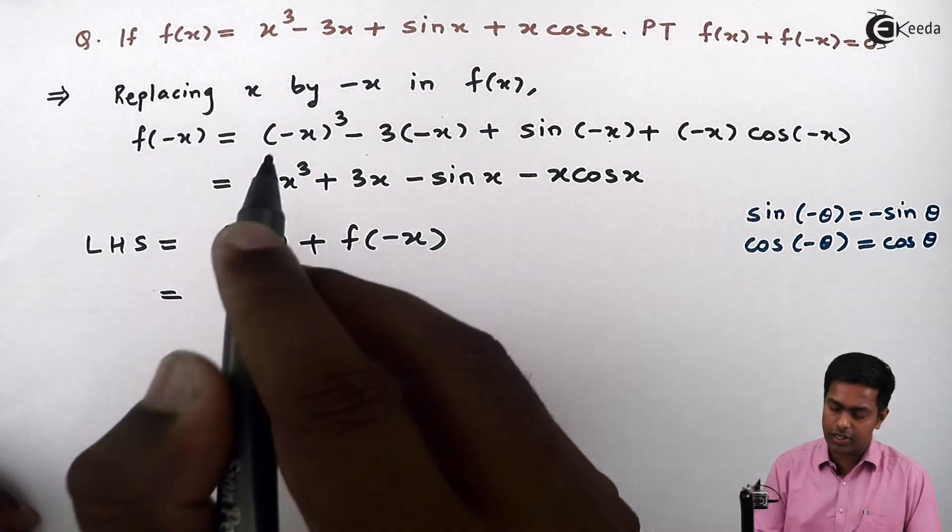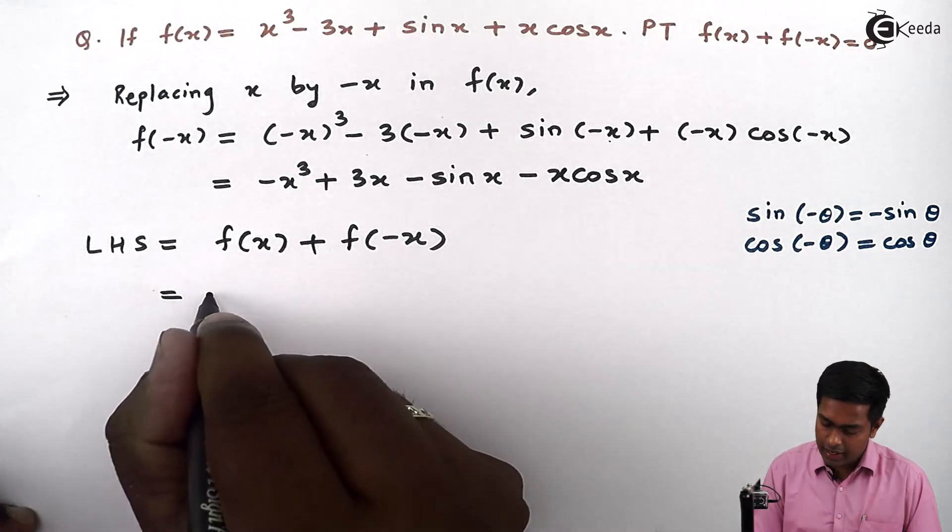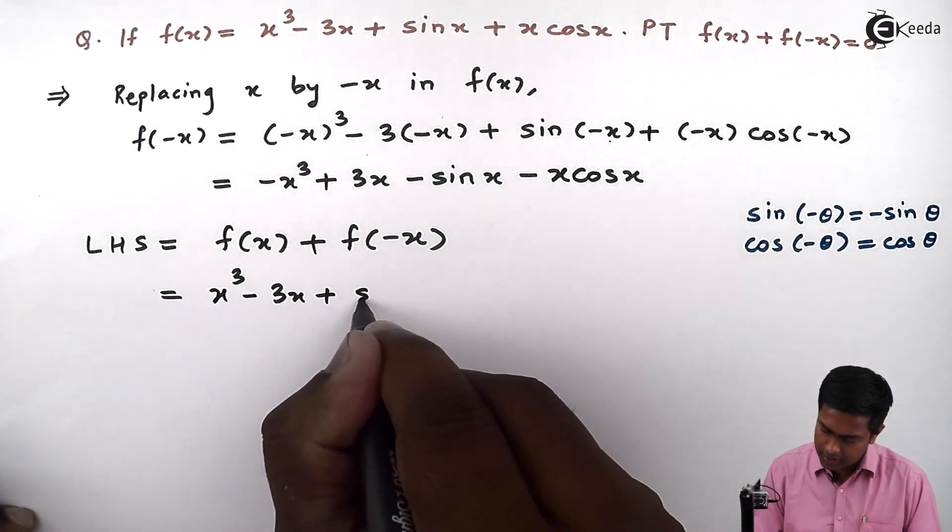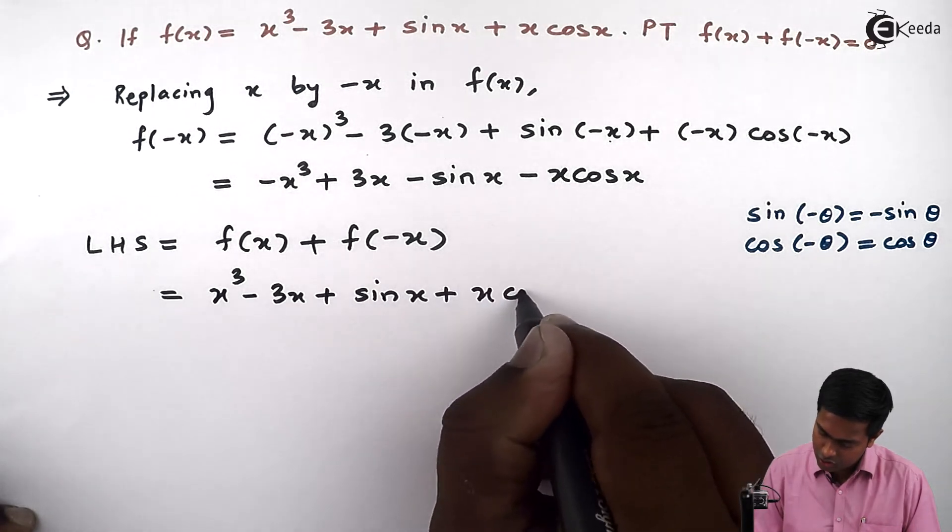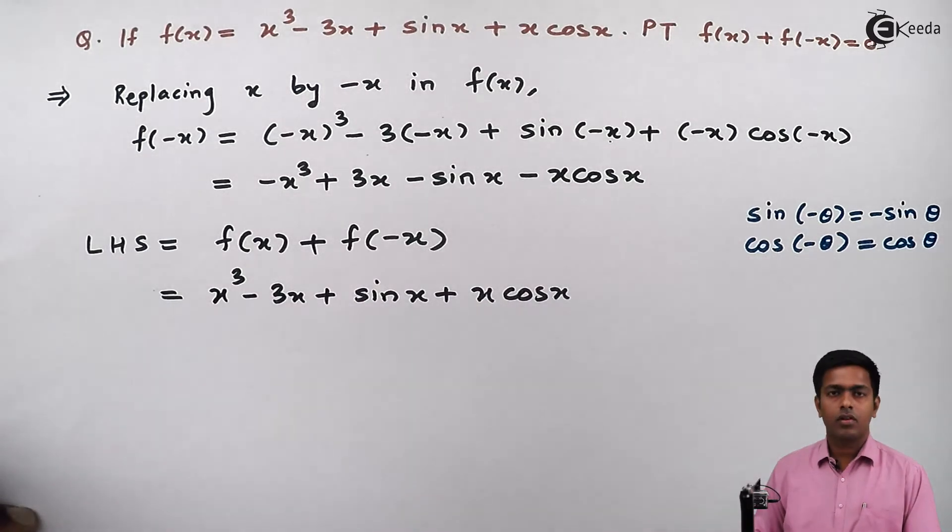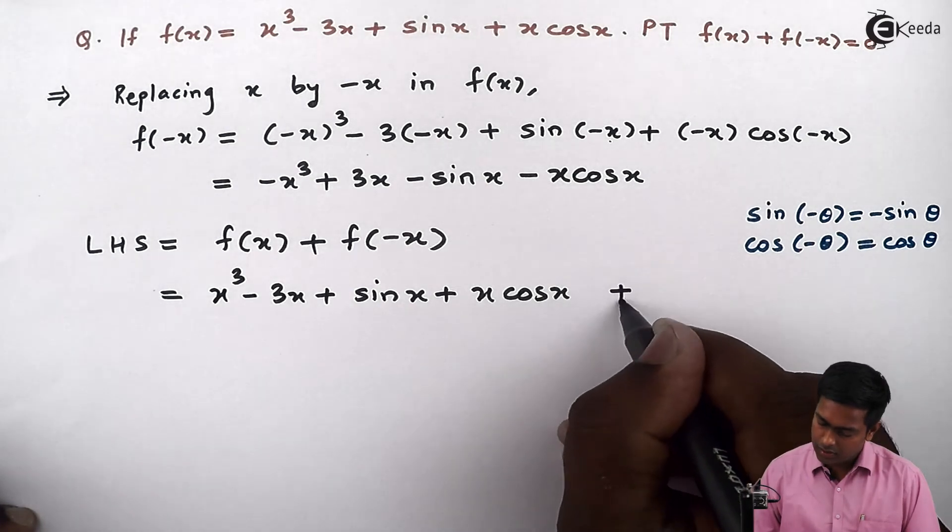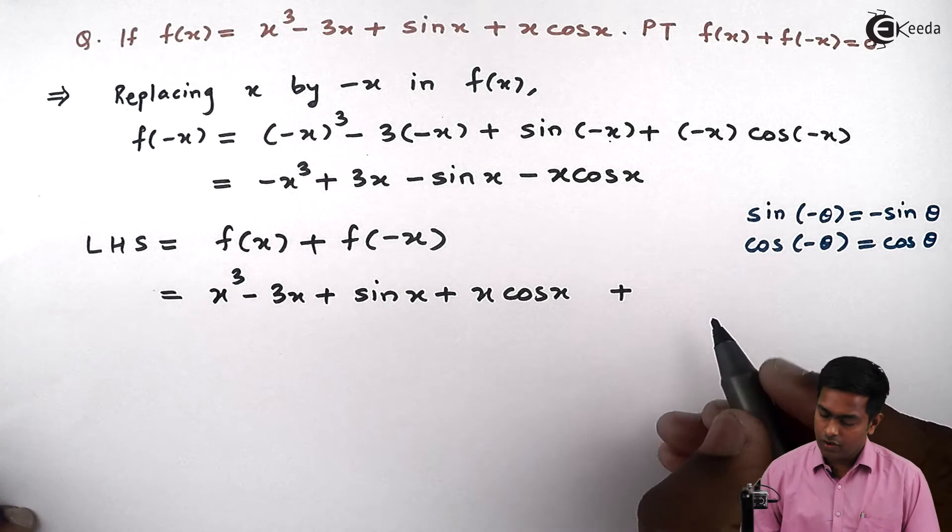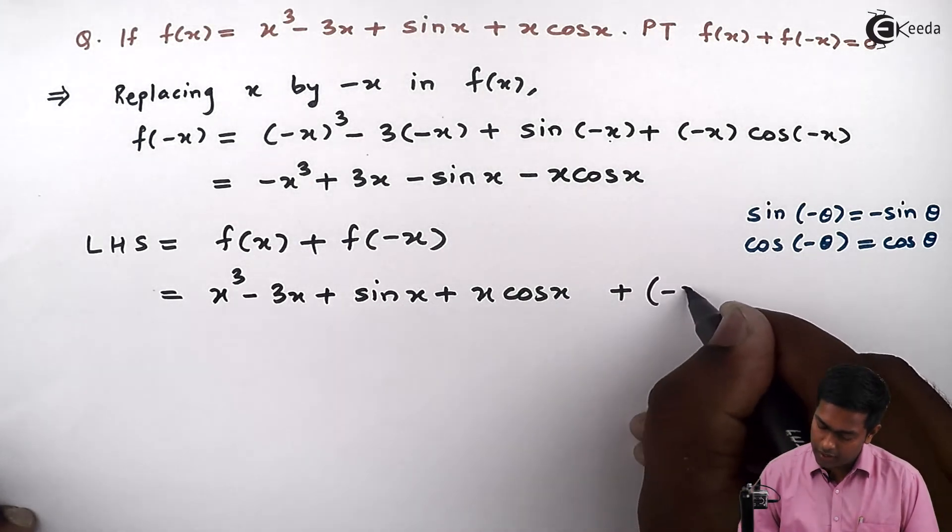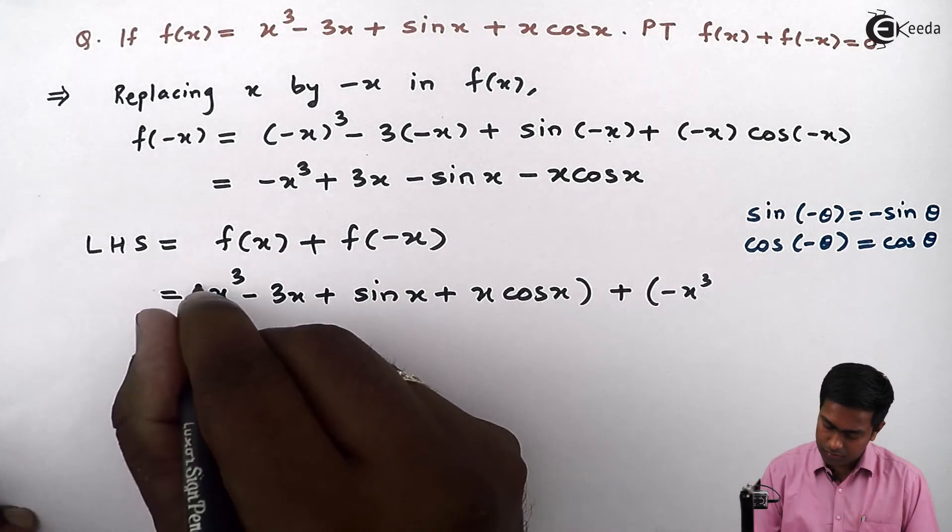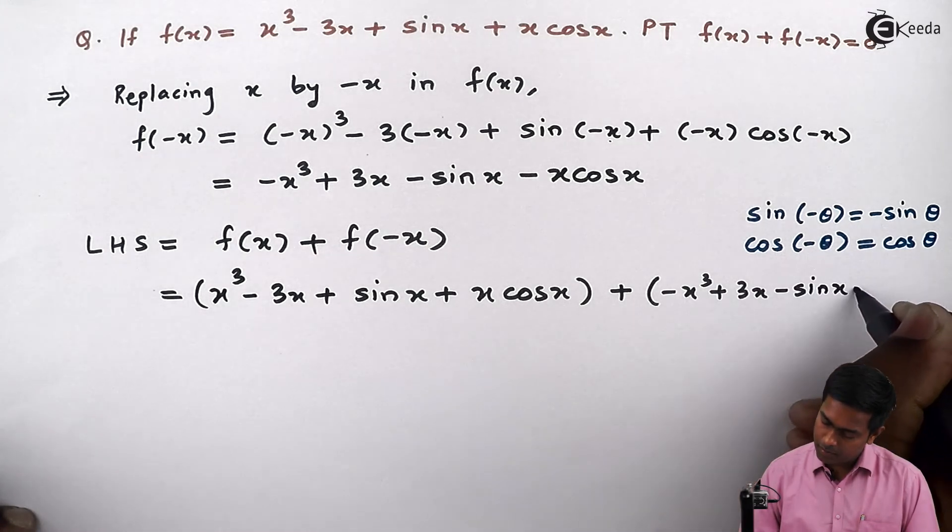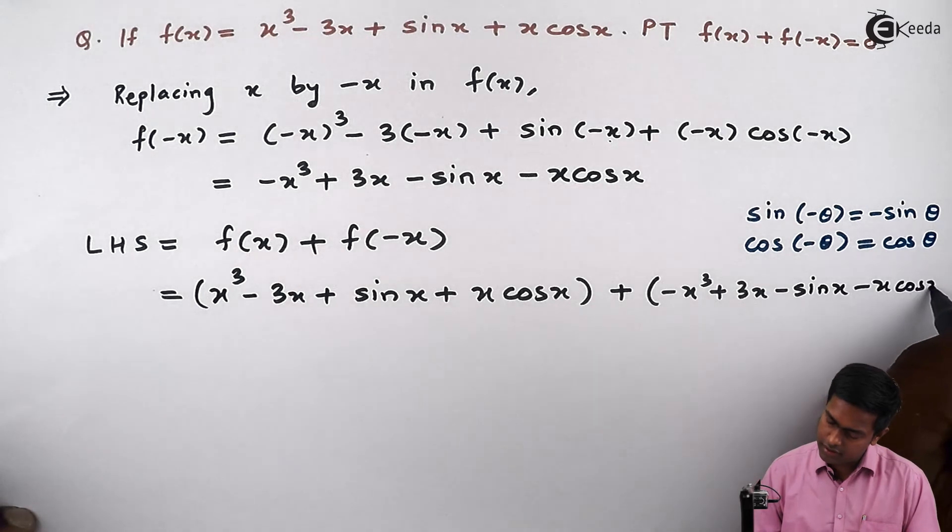So f(x) is given here, that is x³ minus 3x plus sin x plus x cos x, plus value of f(-x) is here, which is -x³ plus 3x minus sin x minus x cos x.